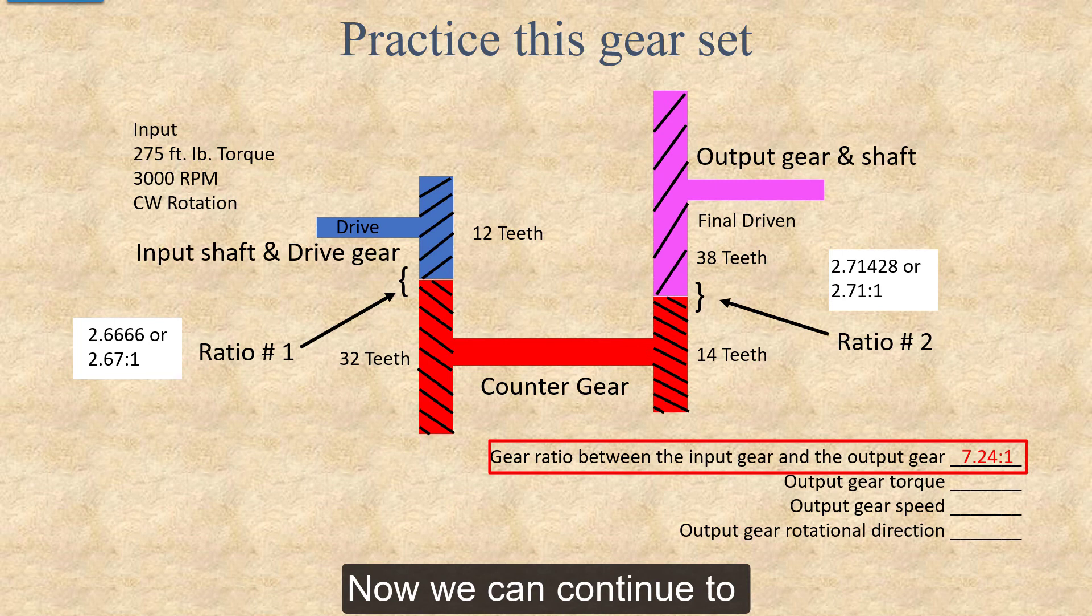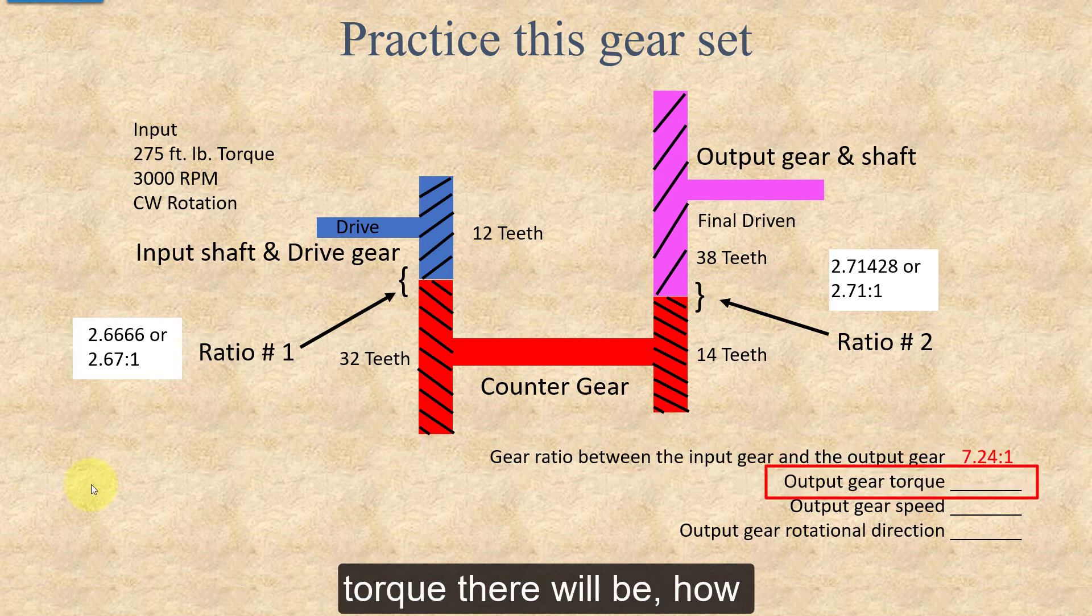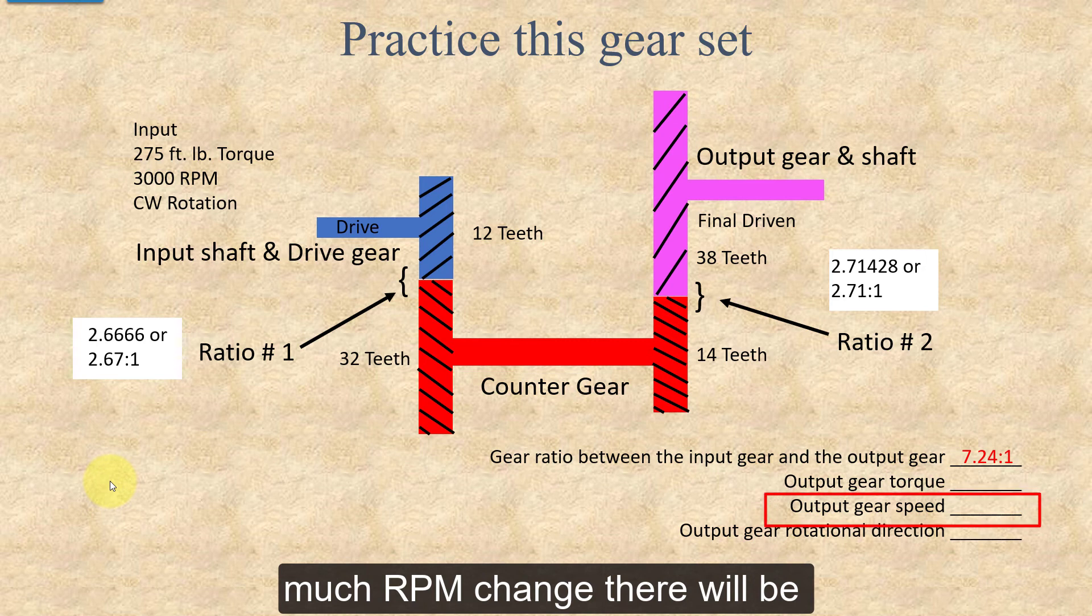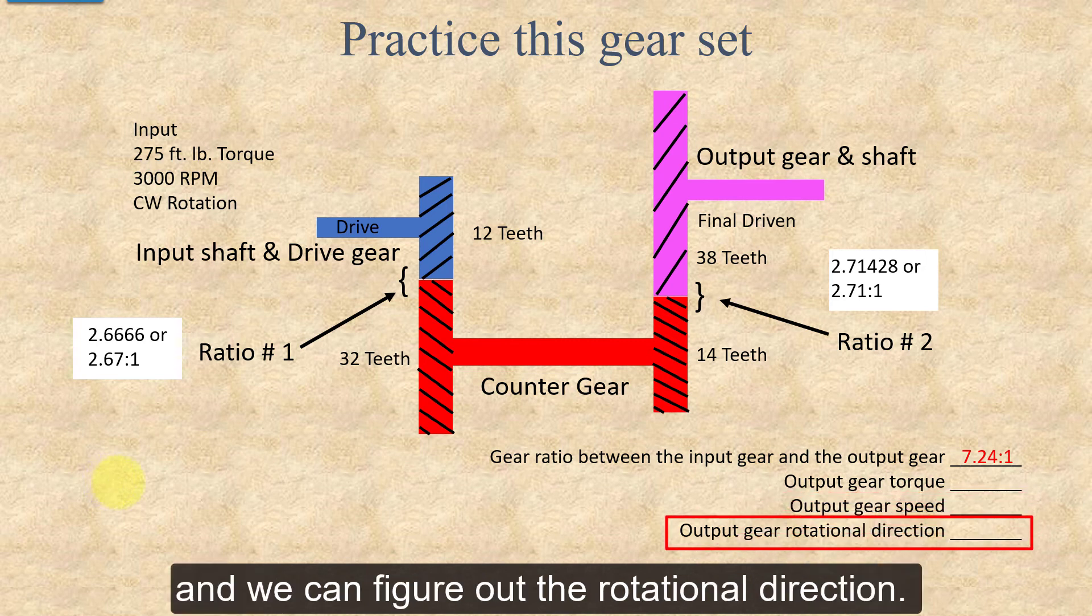Now we can continue to calculate how much output torque there will be, how much RPM change there will be, and we can figure out the rotational direction.